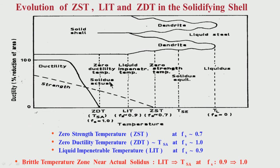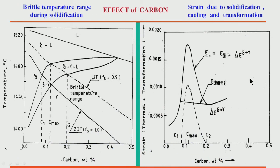We have to be very careful about this brittle temperature region at high temperature — this is called the zero ductility temperature, from which point ductility starts improving. Even slightly below this temperature ductility is quite low, so there is a chance of crack formation around this temperature region — around the actual solidus temperature, where the brittle zone exists. We have to be very careful while the strand is getting cooled during solidification. Now, I have talked about how carbon is affecting this brittle temperature region during solidification — the brittle temperature region near the actual solidus, between solid fraction 0.9 and 1. Let us see how it changes with carbon.